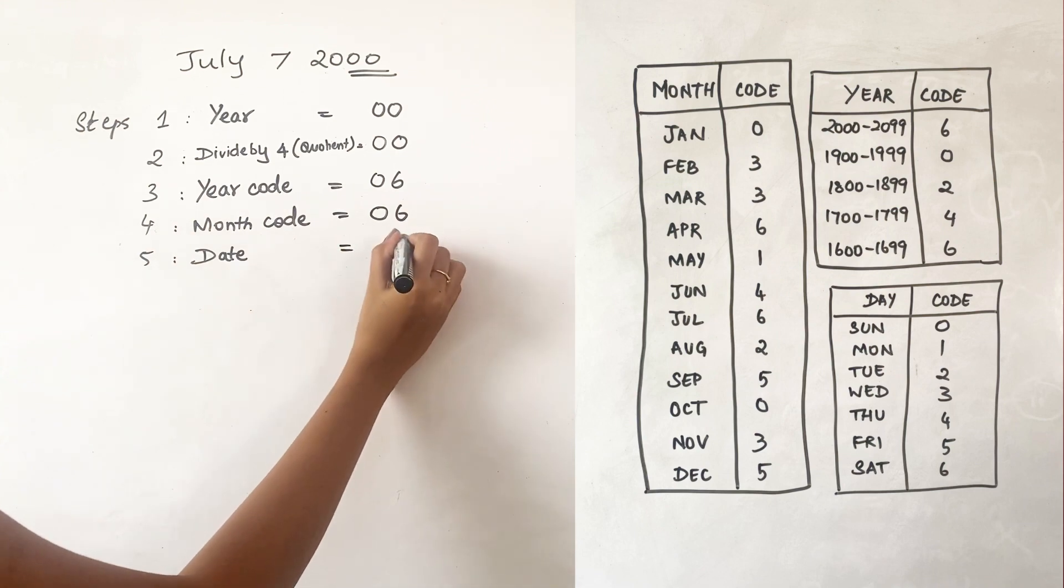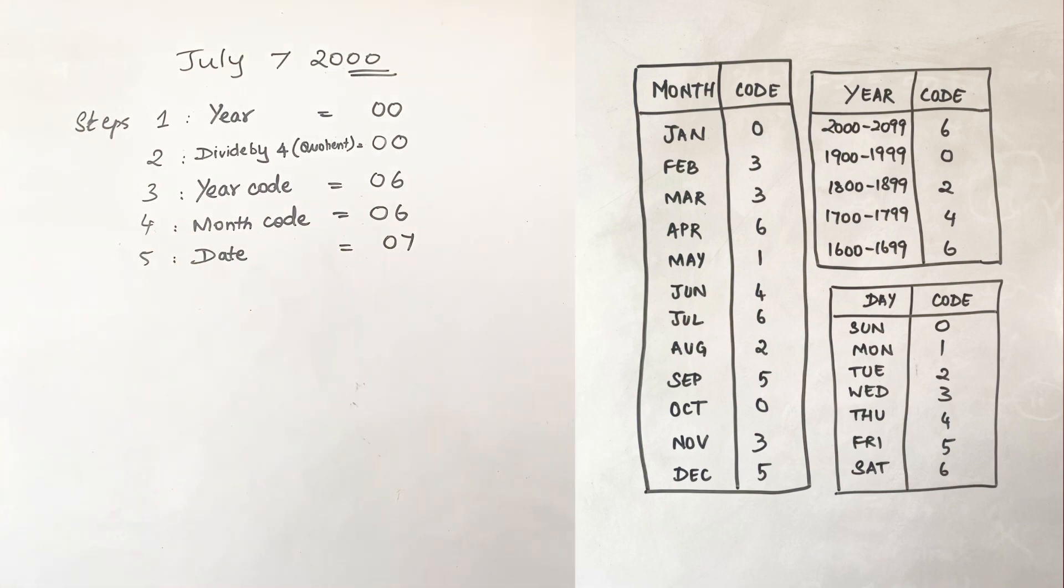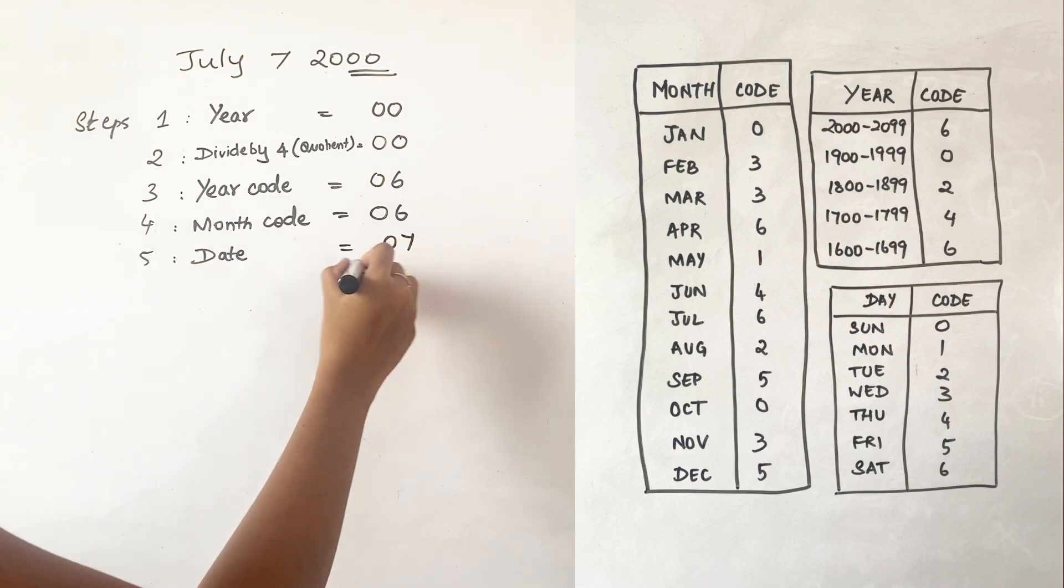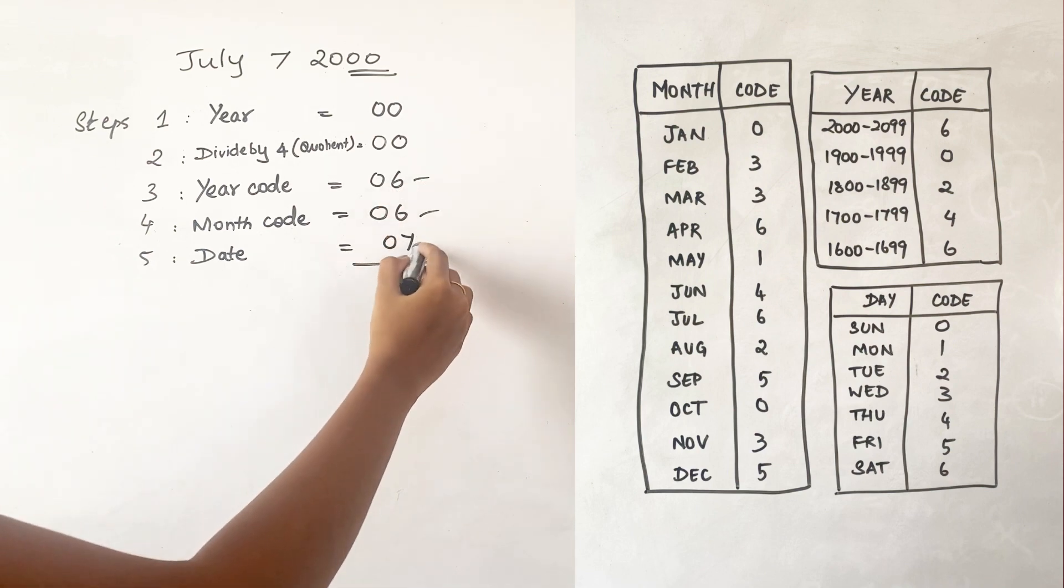The next step, step number five, is very simple because you're just going to copy down whatever date they have given. So it's July 7, you're gonna write seven.